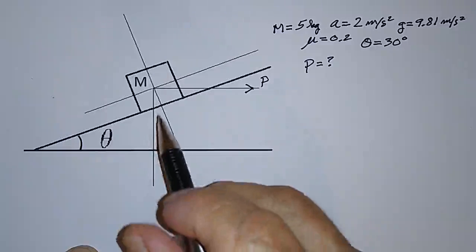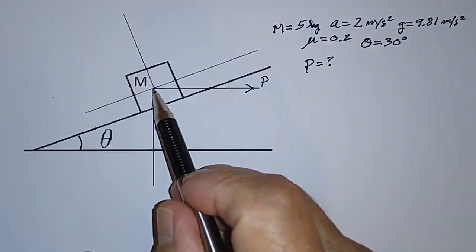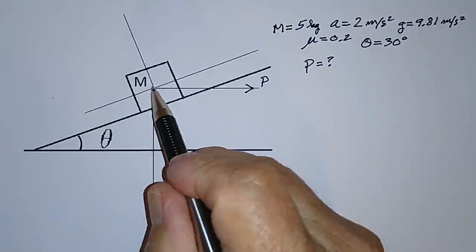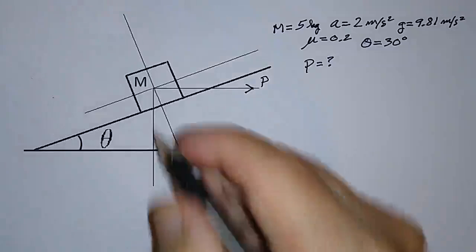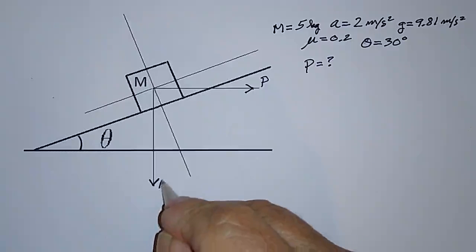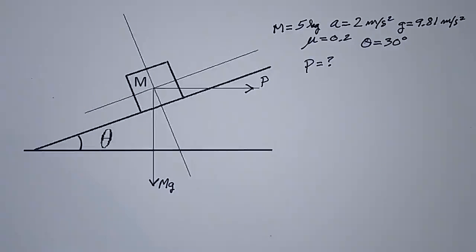So what we have to do is look at the forces acting on M and then apply Newton's second law. The other forces that are acting on M besides P are the force due to gravity, which is just M times G, that's force due to gravity.